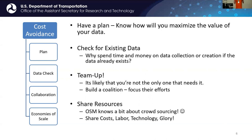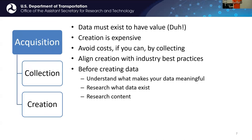OSM is really good about crowdsourcing. Share your costs, your labor, your technology, and ultimately the glory of all the work you're doing. All of this feels like implicit knowledge, but listing it out helps convert implicit knowledge into explicit knowledge. When you're talking about acquisition, creation is expensive — avoid that cost if you can by collecting existing data. If you must create data, align that creation with industry best practices and consider standards: what are other people collecting, what is the content?